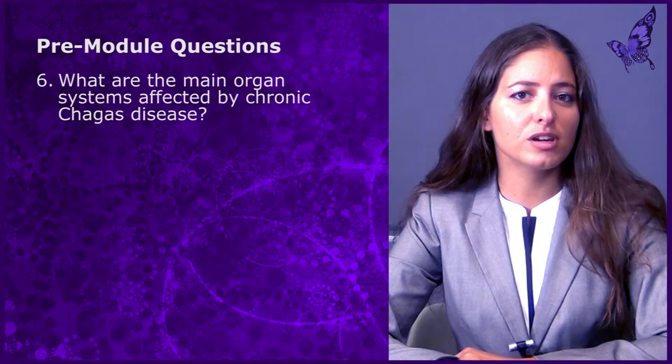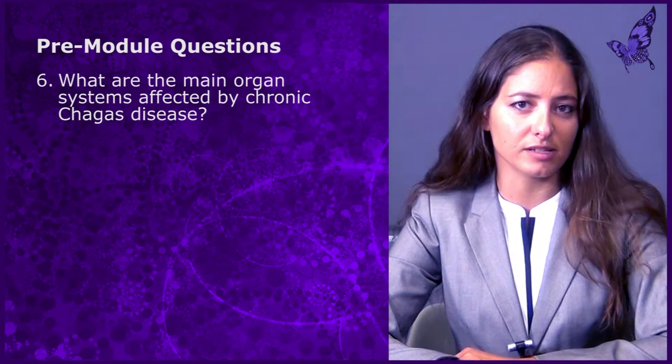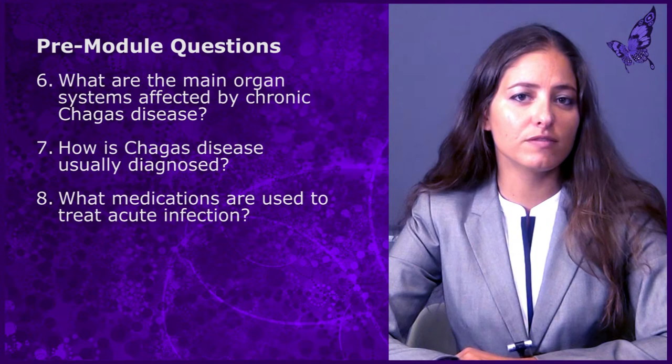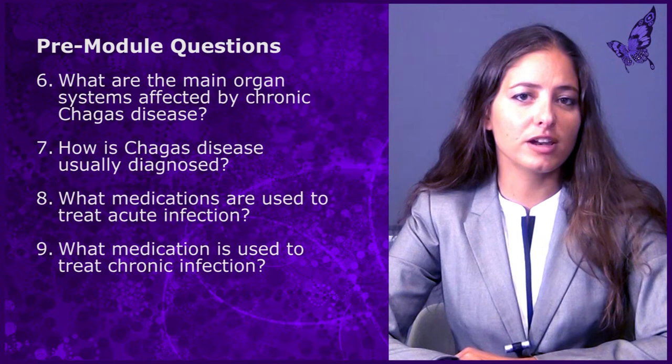Question six: What are the main organ systems affected by chronic Chagas disease? Question seven: How is Chagas disease usually diagnosed? Question eight: What medications are used to treat acute infection? Question nine: What medication is used to treat chronic infection? And finally, question ten: What percentage of newborns to mothers with Chagas disease will contract it?